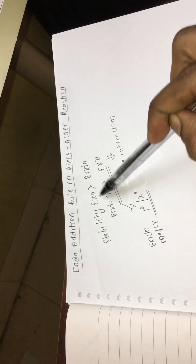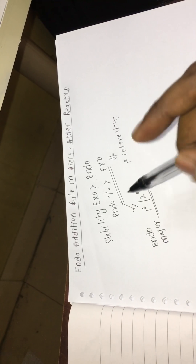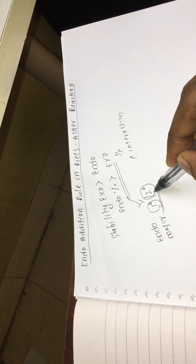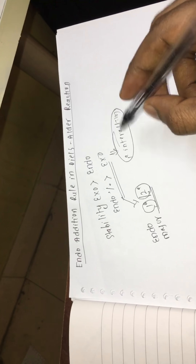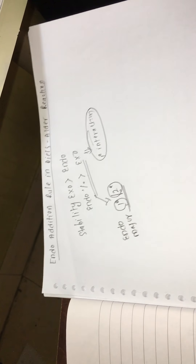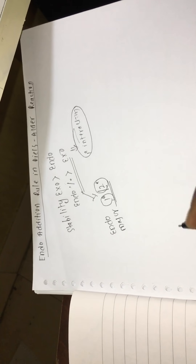But in the Diels-Alder reaction, we are getting the endo product as the major product compared to the exo product. This is because in the case of endo, if you see the diagram, there are primary interactions as well as secondary interactions, whereas in the case of exo we have only primary interactions. Because of that reason, the endo product is major in the Diels-Alder reaction.